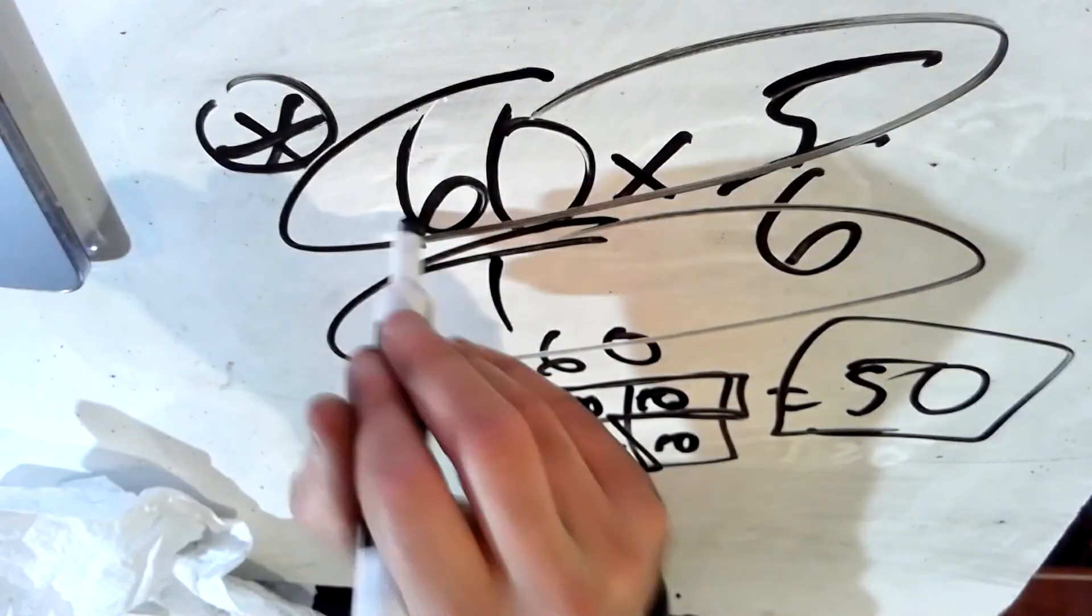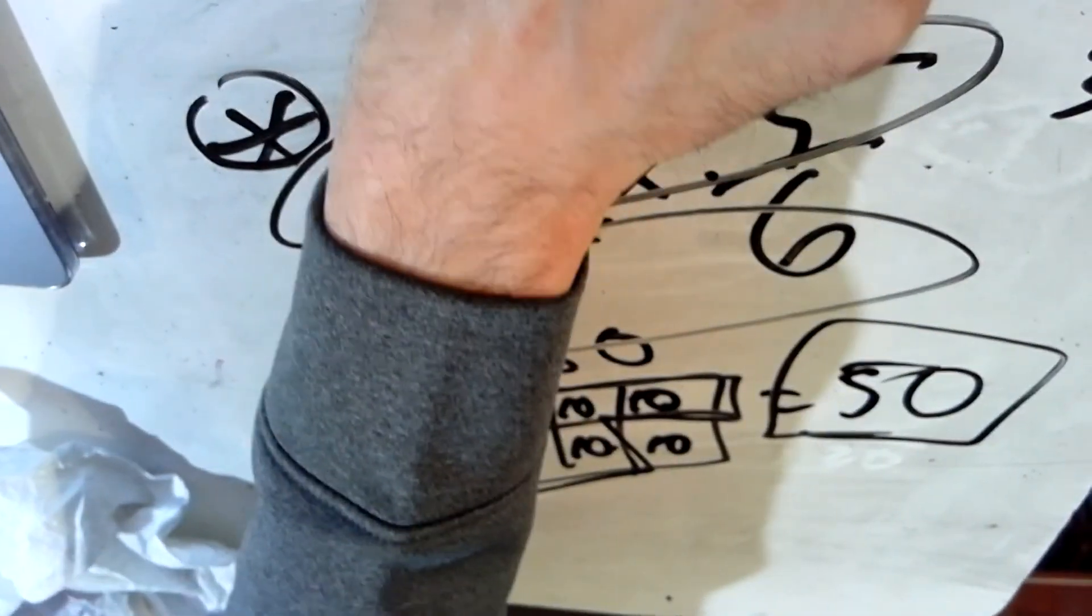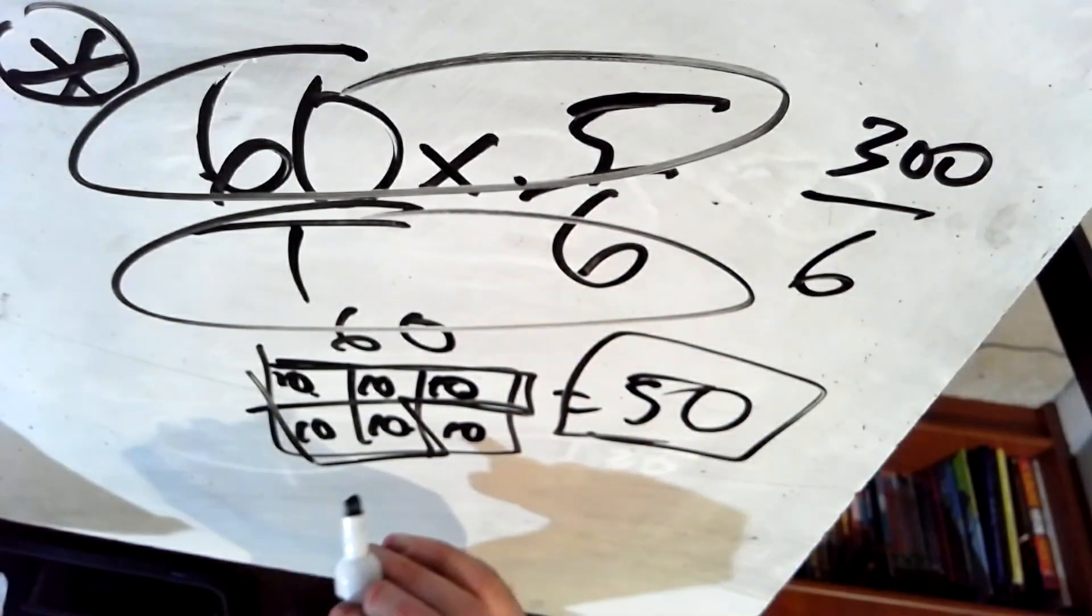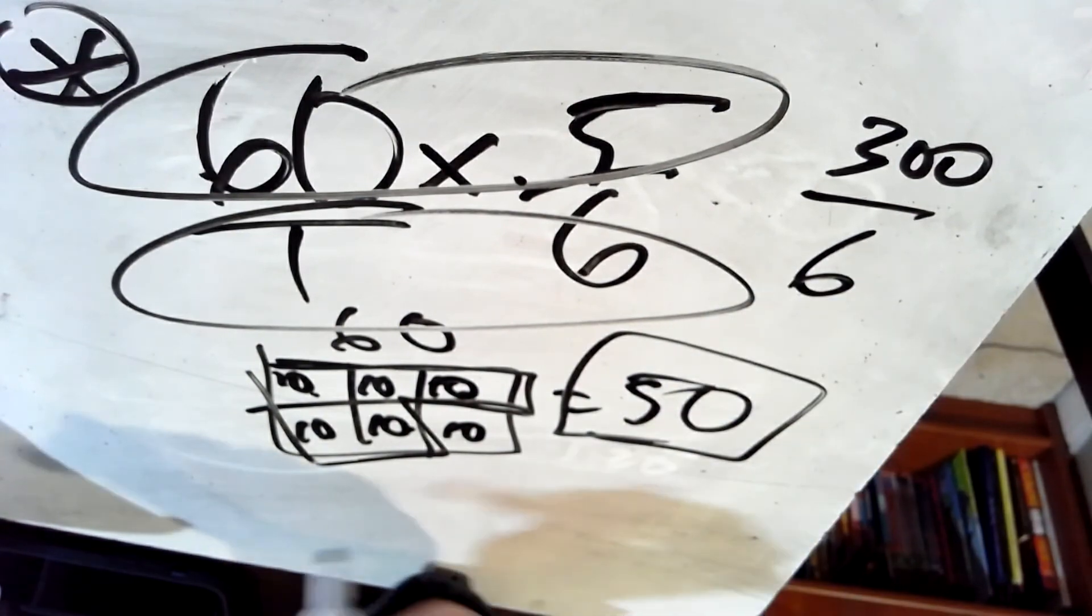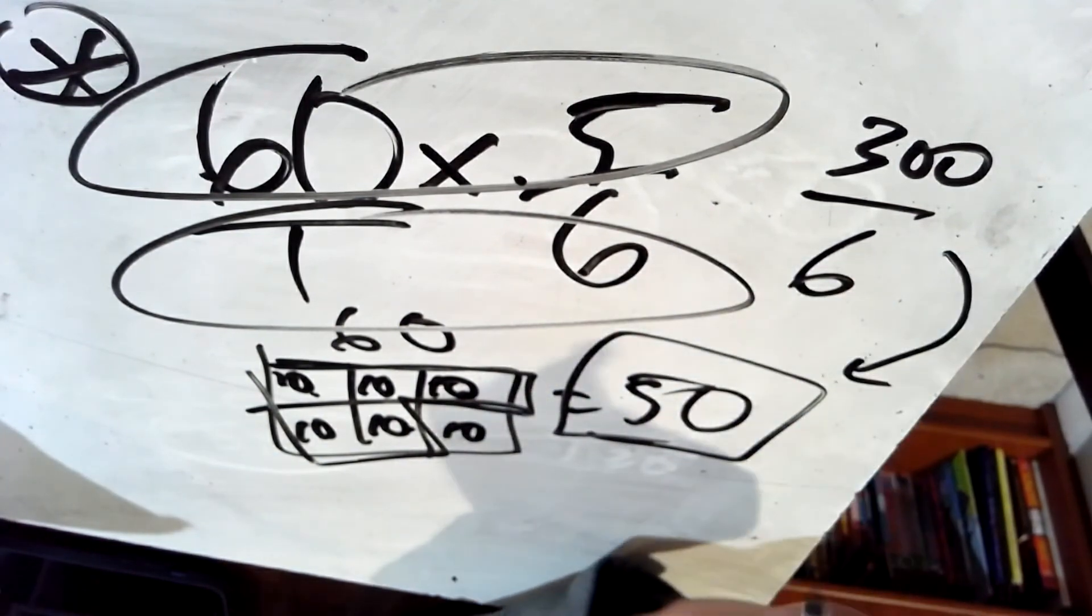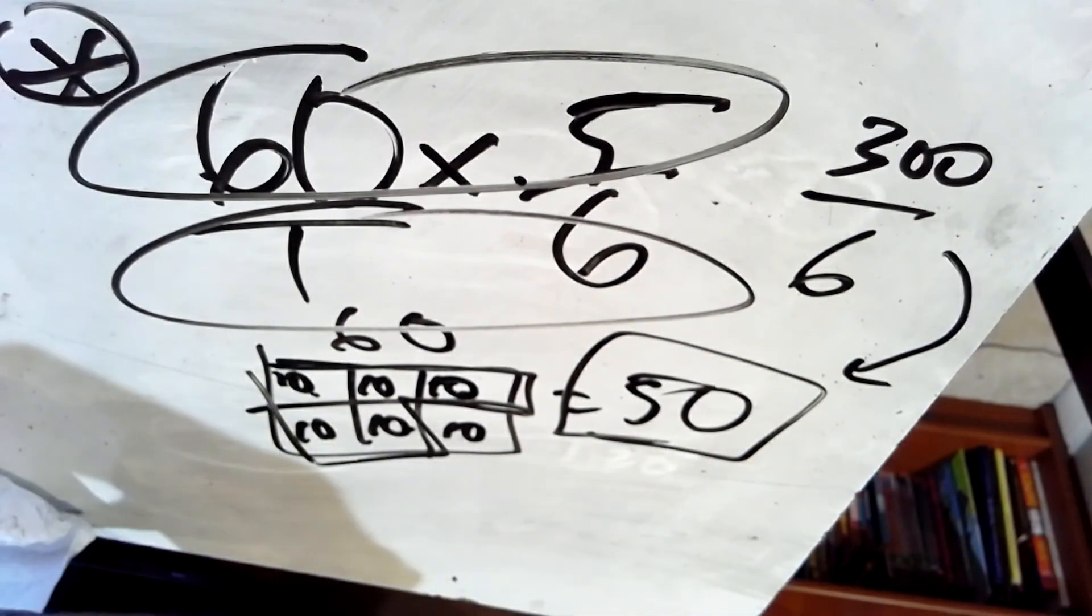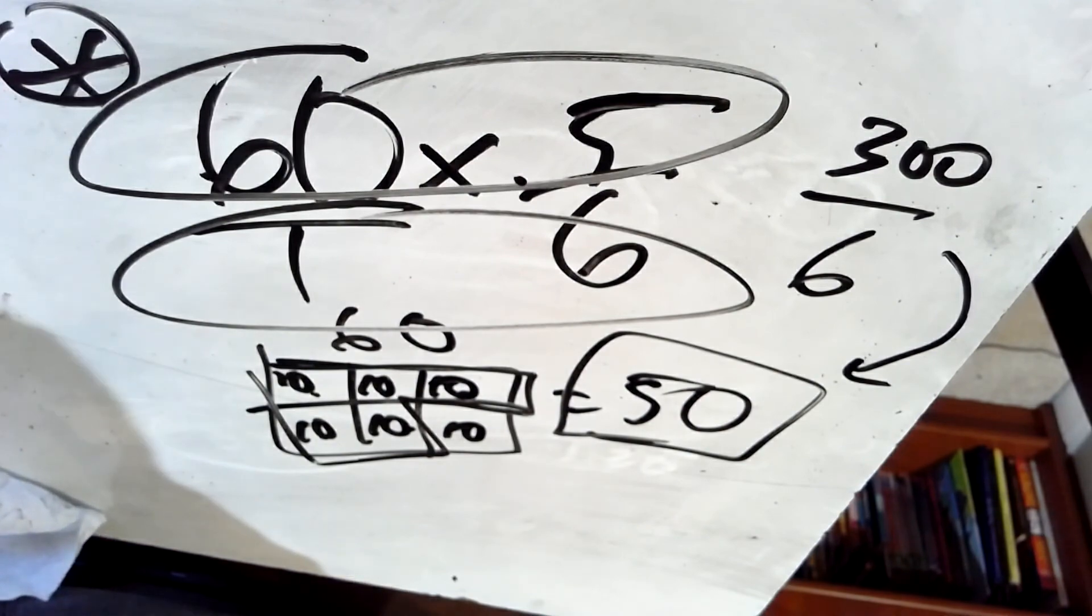Now, another cheat code would be thinking that 60 is the same as 60 divided by 1. 60 over 1. You could multiply across. 60 times 5 is 300. 1 times 6 is 6. What's 300 divided by 6? Well, that's 50. Same answer.